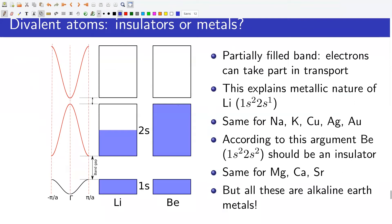It looks like we completely understand the electronic band structure of metals based on what we have done so far. But wait — we know that if we have a partially filled band, then only those electrons can take part in the transport process. A completely full or completely empty band cannot take part in electronic transport. This explains the metallic nature of lithium with electronic configuration 1s² 2s¹ — since the 2s band is half filled, lithium has to be a metal. Similarly, sodium has a half-filled 3s band, copper and potassium a half-filled 4s band, silver a half-filled 5s band, and gold a half-filled 6s band.